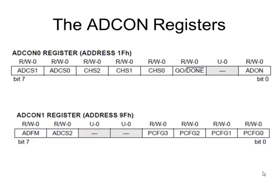Here are a couple of control registers. ADCON stands for Analog to Digital Control Register, and these define how this A-to-D converter is going to be used. We have two control registers: ADCON0 and ADCON1, and they have a bunch of different bits. I'll go into a little bit of detail, but you can look at the PIC reference sheet for complete details about these two registers.